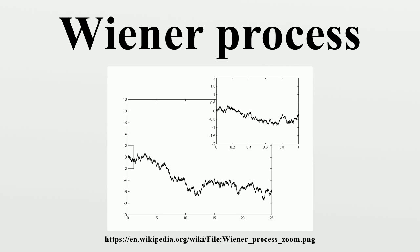In mathematics, the Wiener process is a continuous-time stochastic process named in honor of Norbert Wiener. It is often called Standard Brownian Motion, after Robert Brown.